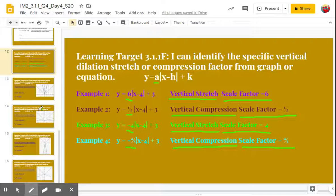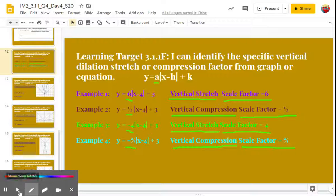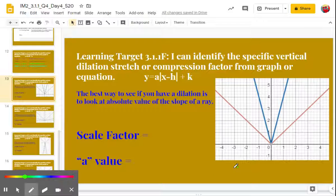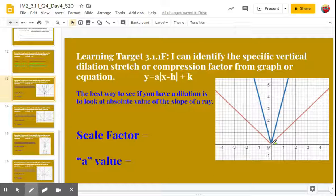All right. I want to look at some graphs now and figure out the A value, figure out if it's a dilation of a stretch or dilation of a compression. So the red graph here is the parent graph, so that's just Y equals absolute value of X. So by just looking at the graph, we know this is going to be a dilation and it's going to be a stretch. But how are we going to figure out the scale factor? So the best way to do it is to look at the slope value.